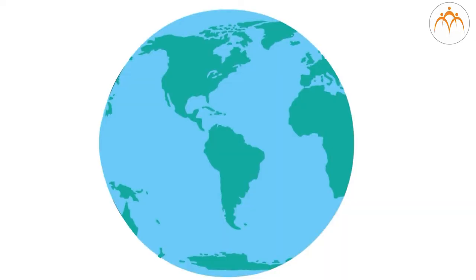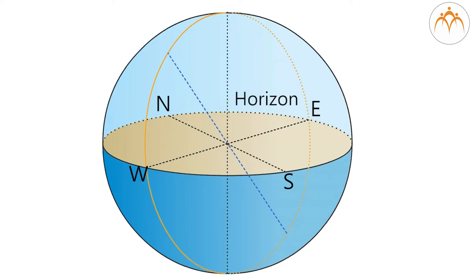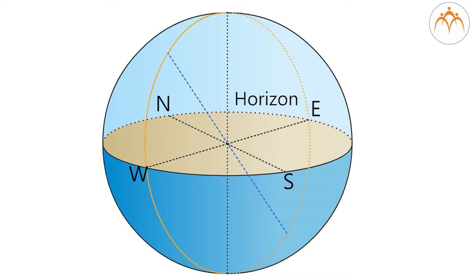Sky watching: Let us know about some basic concepts which are important before we start sky observations. The sky appears to be a hemisphere from the earth. The line where the sky seems to touch the ground is known as the horizon. When we turn around ourselves, we can see a circular horizon. Horizon divides the virtual sphere in two halves. The stars and planets appear to be moving on this imaginary sphere, which is called the celestial sphere.